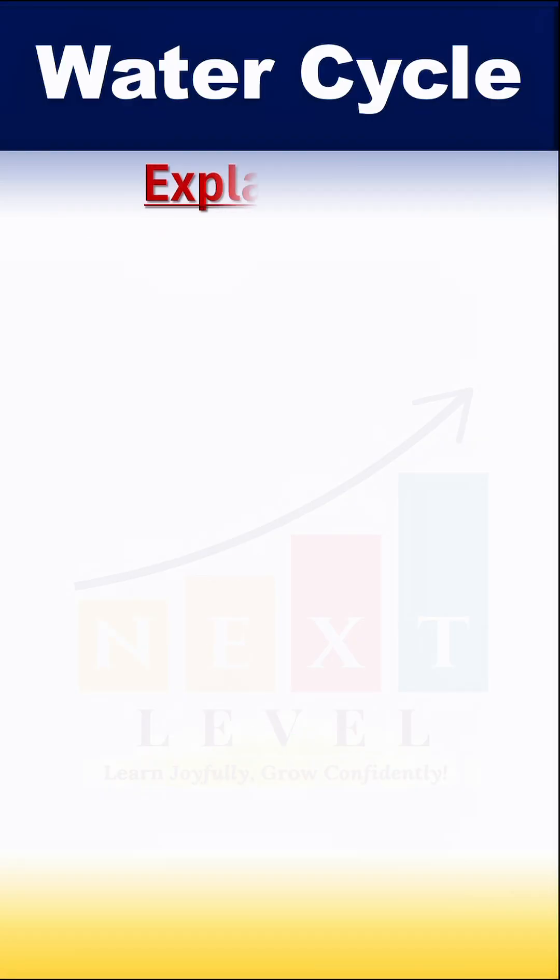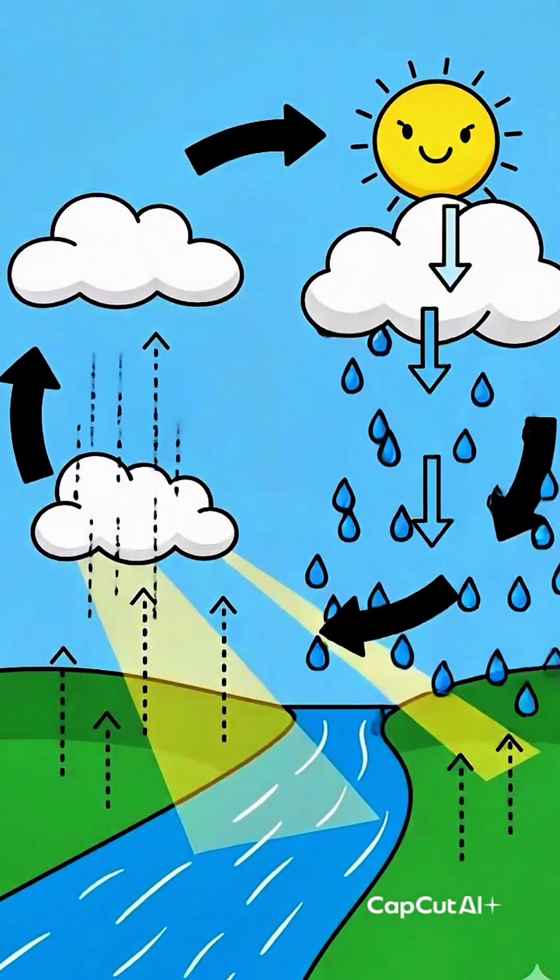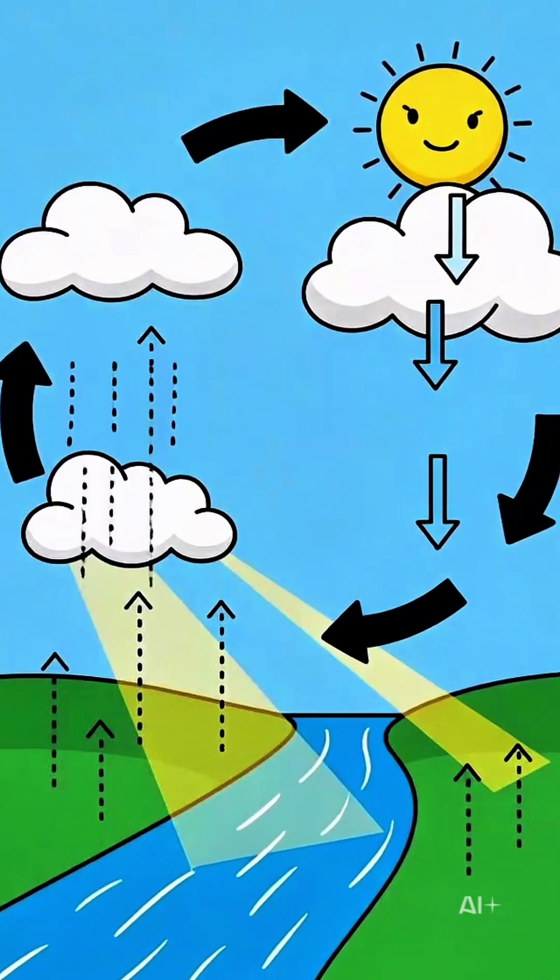Let me explain. Rain water flows into rivers and ocean. Some water evaporates, goes into clouds and falls again. This is the water cycle.